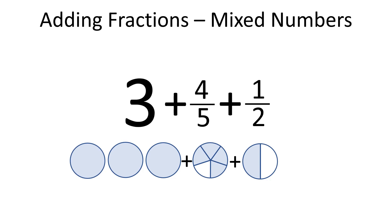Now we can add 4 fifths plus 1 half and add the result to 3. To add 4 fifths to 1 half, we first need to find a common denominator. In our example, it is 10.